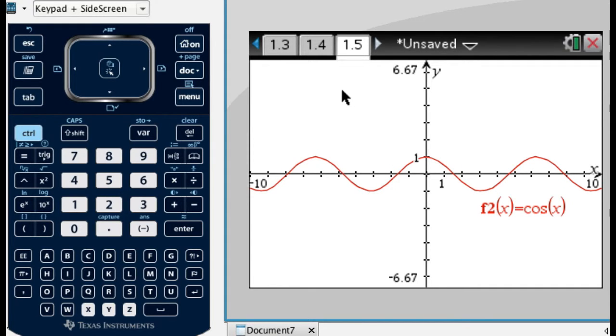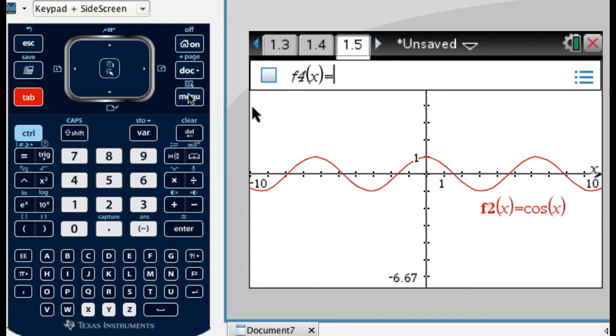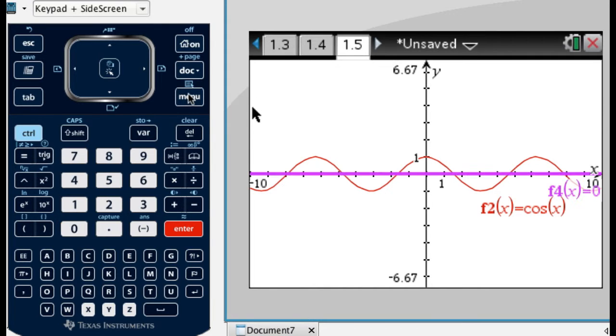What I'm thinking is, a really good way to do that is to actually do what I just did with the maximum. So I'm going to press Tab. I'm going to graph y equals 0, or f4 of x is 0, the horizontal line at y equals 0, which is the x-axis.